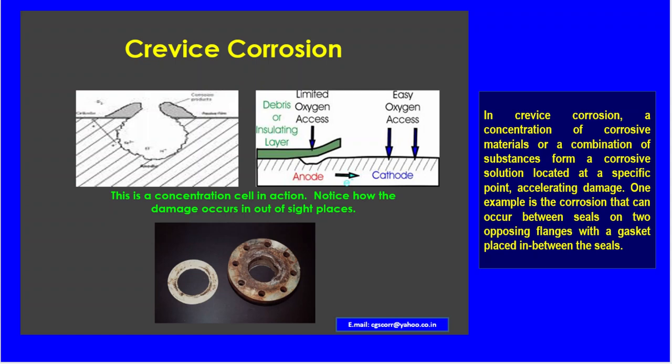One example is the corrosion that can occur between seals on two opposing flanges with a gasket placed between the seals. The corrosion product debris hinders access of oxygen inside the metal, so that point acts as the anodic region — where there is less access to oxygen, that place acts as anodic.